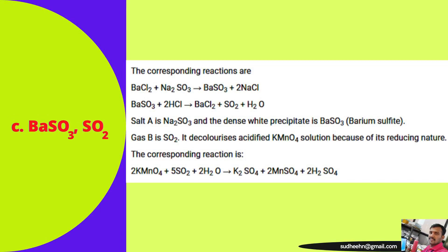In the reaction, barium chloride is made to react with sodium sulfate which gives barium sulfate and two molecules of sodium chloride. When barium sulfate is made to react with hydrochloric acid it gives barium chloride, sulfur dioxide, and water. Salt A is Na2SO4 (sodium sulfate), the dense white precipitate is barium sulfate. Gas B is sulfur dioxide — it decolorizes acidified KMnO4 because of its reducing nature. The reaction is: 2KMnO4 + 5SO2 + 2H2O → K2SO4 + 2MnSO4 + 2H2SO4.